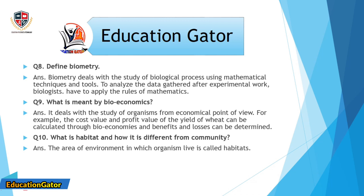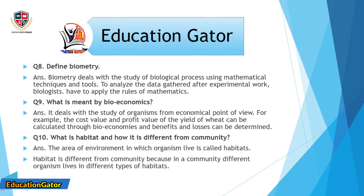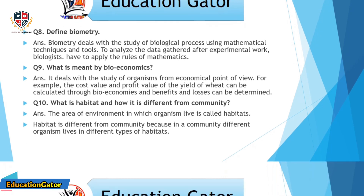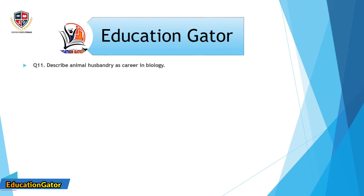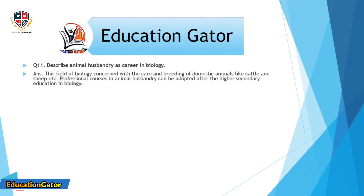Question number 10: What is habitat and how is it different from community? Ans. The area of environment in which an organism lives is called habitat. Habitat is different from community because in a community, different organisms live in different types of habitats.